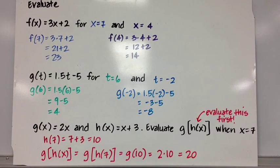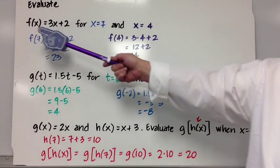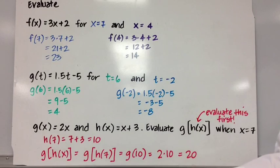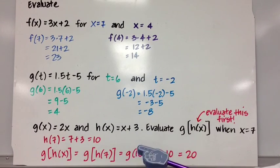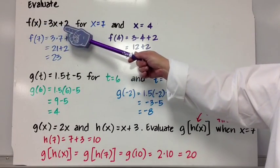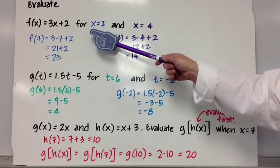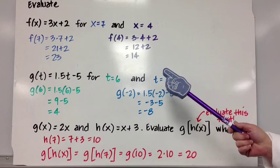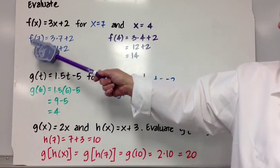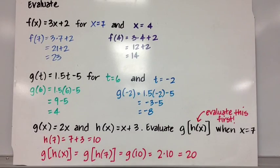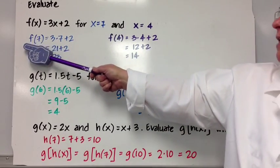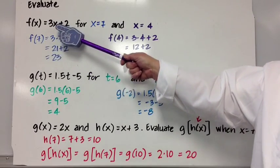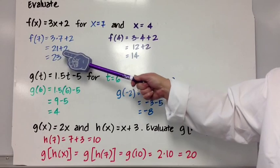Let's evaluate some expressions in function notation. If f(x) = 3x + 2, don't get freaked out - f(x) is just another way of writing y. We want to evaluate it for two different cases: when x = 7 and x = 4. So f(7) means we're evaluating this function when x is 7. f(7) = 3 times 7 plus 2 = 21 + 2 = 23.